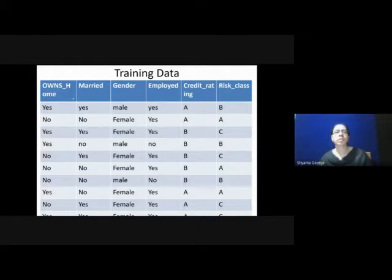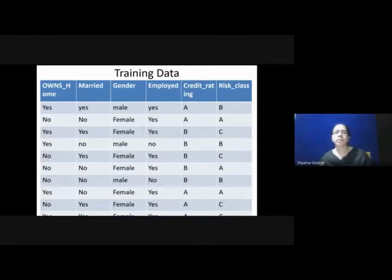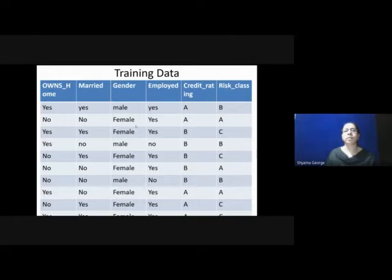Based on the features Ons, Home, Married, Gender, Employed and Credit Rating, the records are labeled as A, B and C. Now, we have to generate a decision tree from this training data using information theory. We will see the various steps for generating the decision tree.